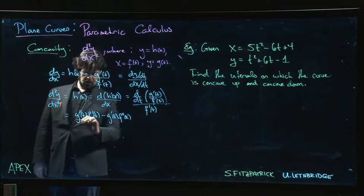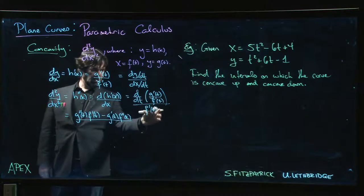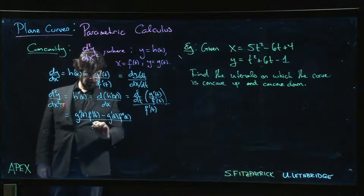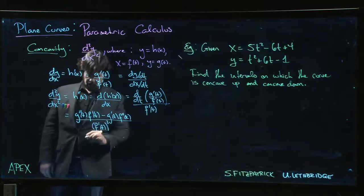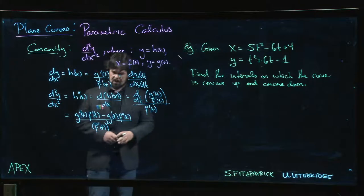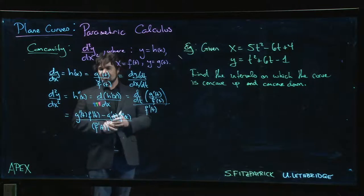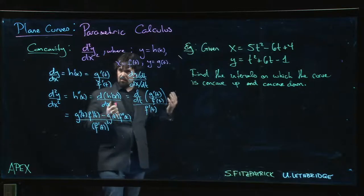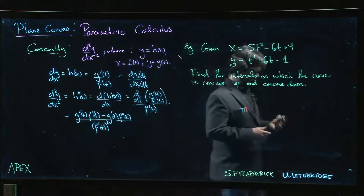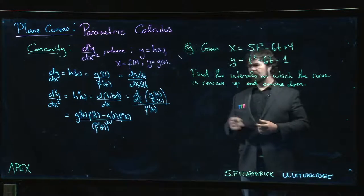And then we divide by the bottom squared, but then we also have to divide by that same bottom again, so we get something like this: f prime of t cubed. That's certainly not as nice as calculating the second derivative if we just have y as a function of x.